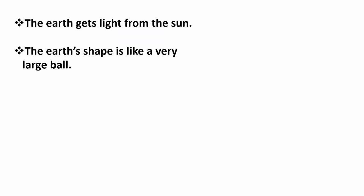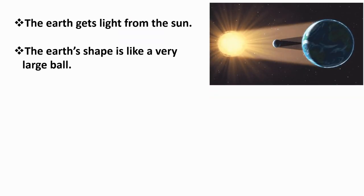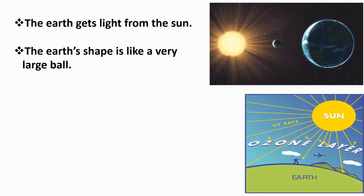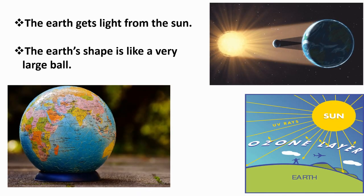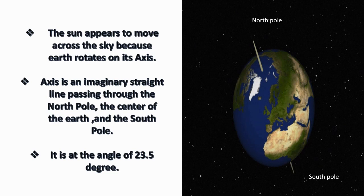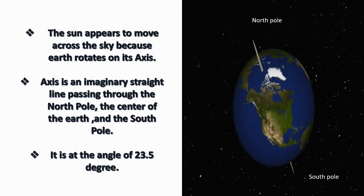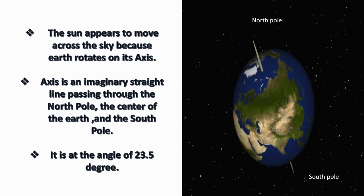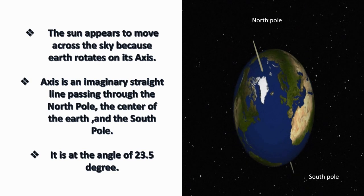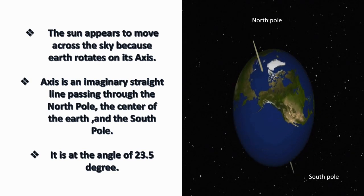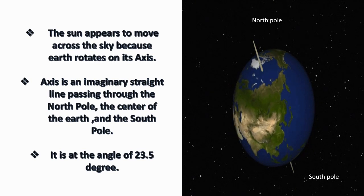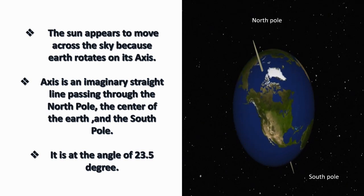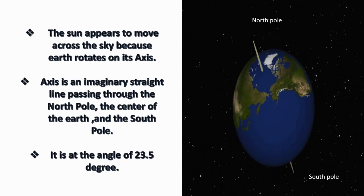We stay on the planet Earth, and the Earth gets light from the sun. The Earth's shape is like a very large ball. The sun appears to move across the sky because Earth rotates on its axis. The axis is an imaginary straight line passing through the North Pole, the center of the Earth, and the South Pole. It is at an angle of 23.5 degrees.